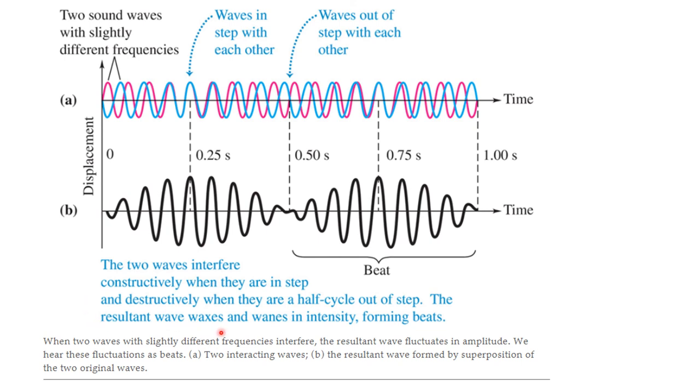So, the two waves interfere constructively when they're in step and destructively when they are a half cycle out of step. The resulting wave waxes, grows, and wanes, gets smaller in intensity, and it forms beats. This is the beat frequency.